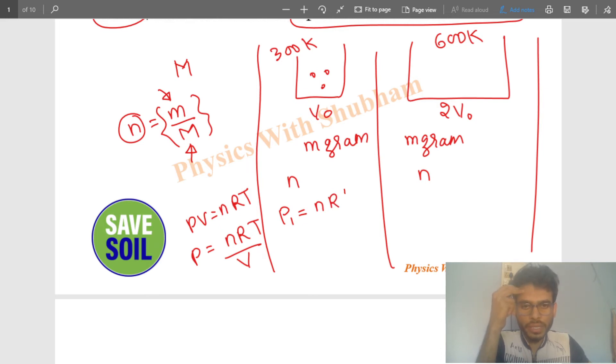For the second vessel, n (number of moles) is the same, R times temperature which is 600, divided by volume which is 2V naught. So you can see, this 2 will cancel with the 600 to make it 300, and the pressure P1 equals P2.